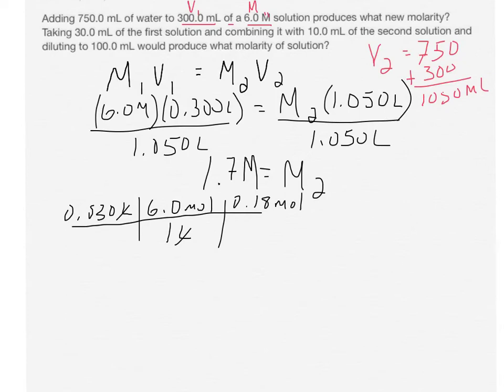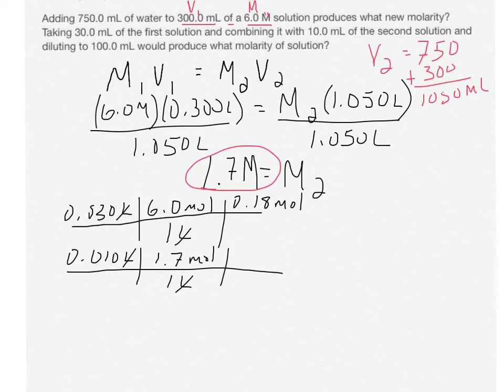Or, I'm sorry, 0.18 moles. So now we have that, that's the first solution. Then it tells us we're taking 10 milliliters of the second solution. Well, the molarity of the second solution is this right here. So we're going to do 0.010 liters, volume in liters. And that is a 1.7 moles per liter. Again, our liter label will cancel. And what we'll have is 0.017 moles.